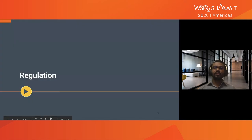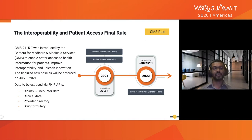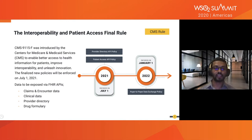To solve this interoperability problem in the US, there's a regulation published by the Centers for Medicare and Medicaid Services — CMS. The rule is the Interoperability and Patient Access Final Rule. This rule is enforced on July 1st, 2021, but ideally you need to finish implementation by January 1st, 2021. With the regulation, as a payer you have to expose claims and encounter data, clinical data, provider directory, and drug formulary data via FHIR APIs.